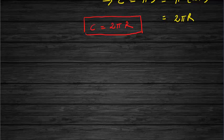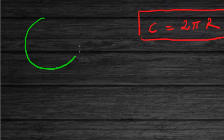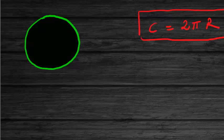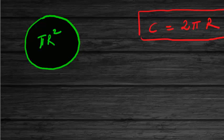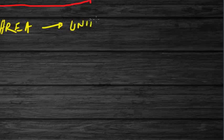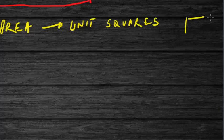Let us keep all these points in mind and go back to the original question: how is it that the area of a circle equals πr²? How is this dark green region equal to πr²? First, what is area? Area is measured in unit squares. A unit square is a square with its side measuring unit length.